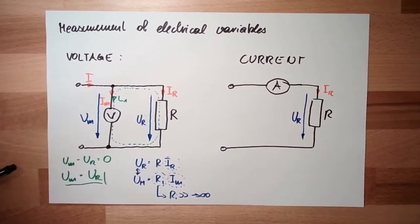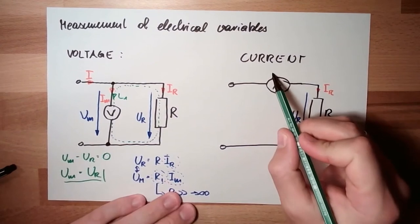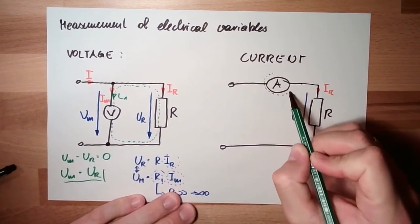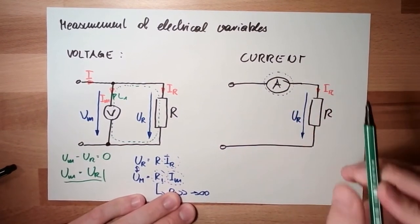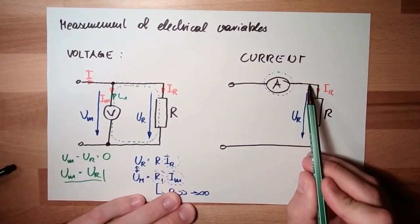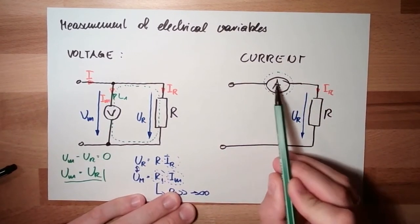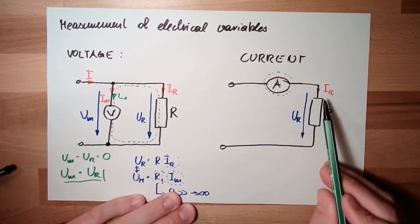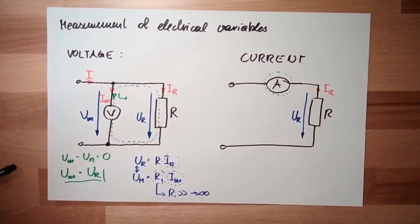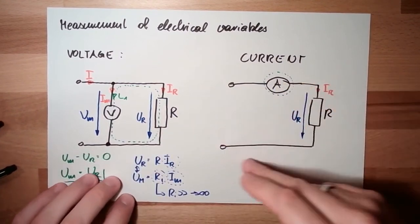Because, also remember, Kirchhoff's first rule, first law, the point rule. This is considered as point. And the current which is going out, is the current which is going in. So the same current in the serial connection, the same current has to pass everything.